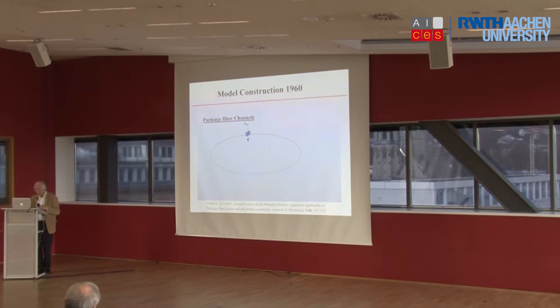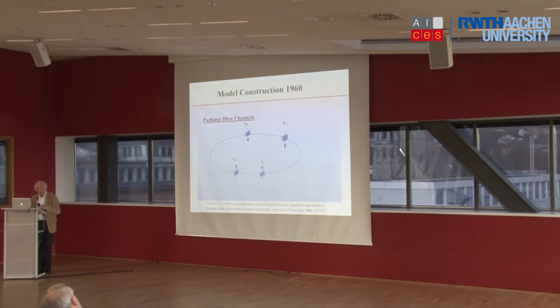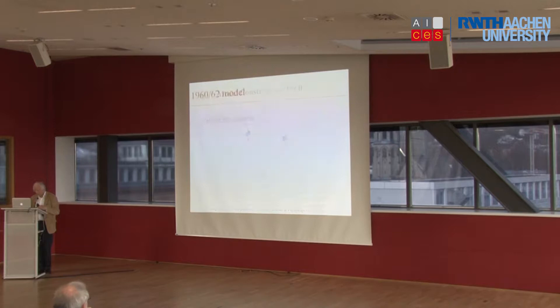The reason I did that was that I had experimental information on the following channels in the heart: the sodium channel, which had been characterized also in nerve previously by Hodgkin and Huxley in their marvellous work in 1952, a chloride channel, and two types of potassium channel. I wanted to know simply: was it possible to construct a computer model of the rhythm of the heart using the equations for those four channels?